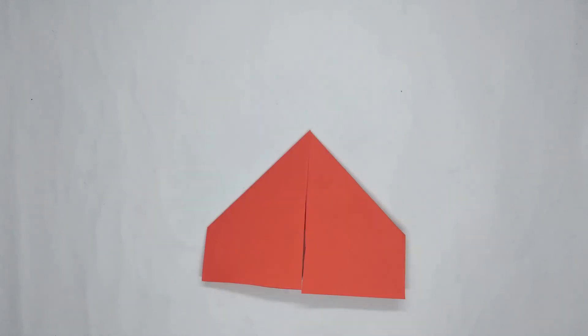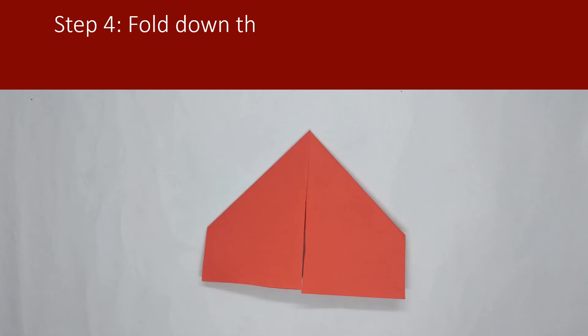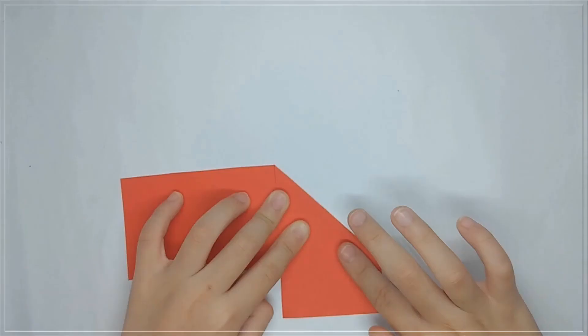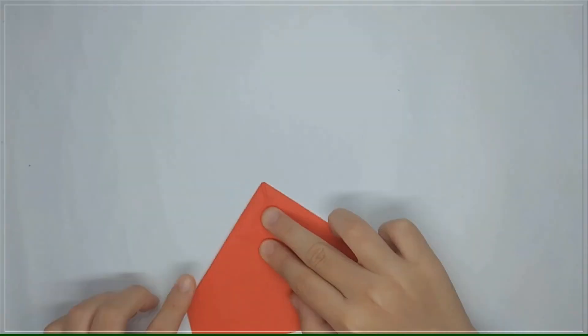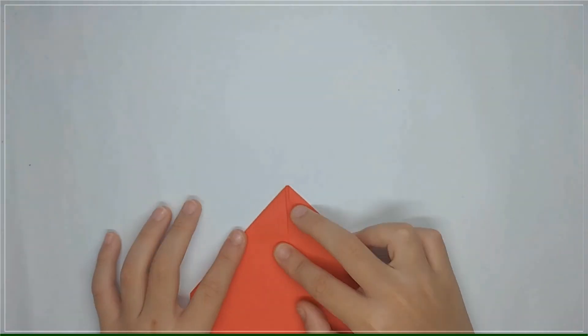Step 4. Fold down the top left corner along the axis of symmetry. Here. Fold down the top left corner along the axis of symmetry so that the upper edge lies along the crease formed by the center fold.